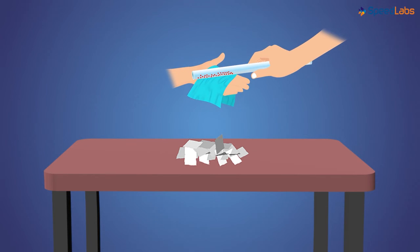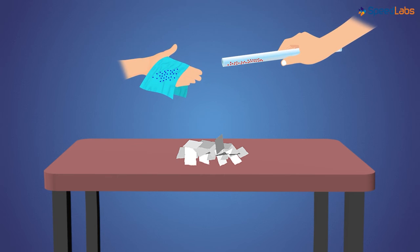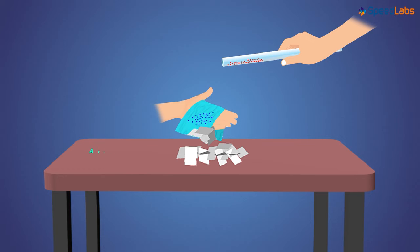In fact, not only the glass rod, but the silk cloth also becomes charged. To justify this, we bring the rubbed part of the silk cloth near these pieces of paper, and we see that the pieces of paper stick to the surface of the silk as well. Here as well, there is an attraction between the two objects.